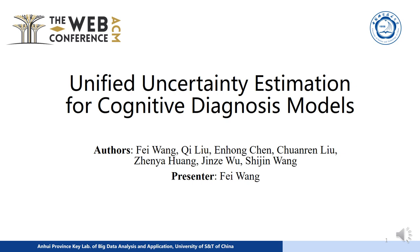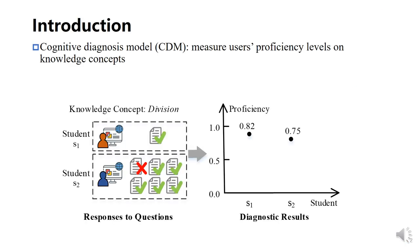This is the summary of our work accepted by WWW 2024: Unified Uncertainty Estimation for Cognitive Diagnosis Models. Cognitive diagnosis models have been widely used in different areas, especially intelligent education, to measure users' proficiency levels on knowledge concepts based on their responses to questions. In this example, the student S1 is diagnosed to have a proficiency of 0.82 on the knowledge concept of division.